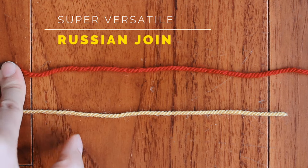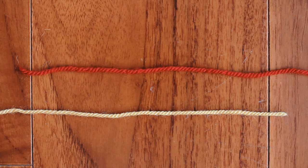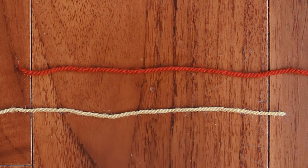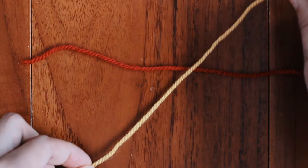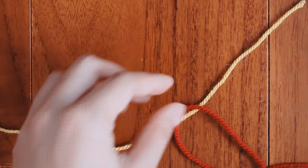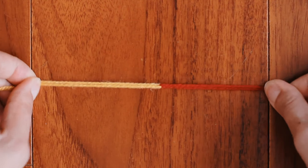I'm going to use this yellow and red yarn to show you how to do it. Normally you would use the same yarn when you're doing a join, but for the sake of this tutorial I'm using contrasting colors. What we're going to do is just lay one strand of yarn over the other, and then bring the ends over to the other side so that now the yarns are interlocking.